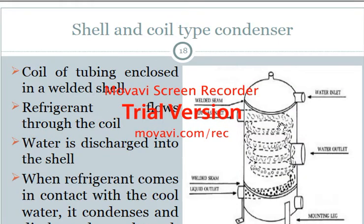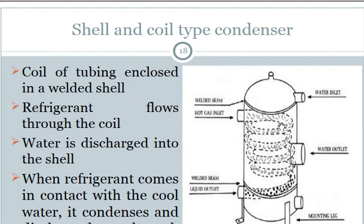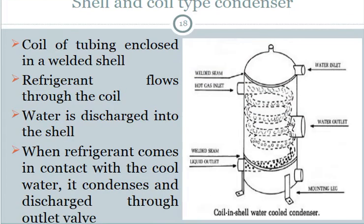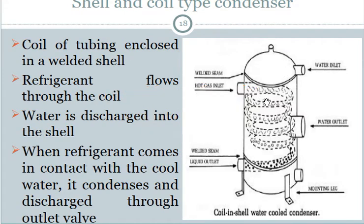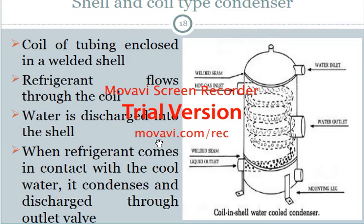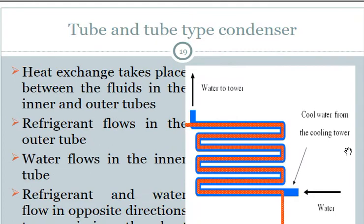The shell and coil type condenser is similar to the first type but is constructed with a spiral coil. The refrigerant flows through the inside of the coil tube, and water is supplied to the shell around the tubes. When the refrigerant comes in contact with the cold water, it is condensed and discharged through the valve.